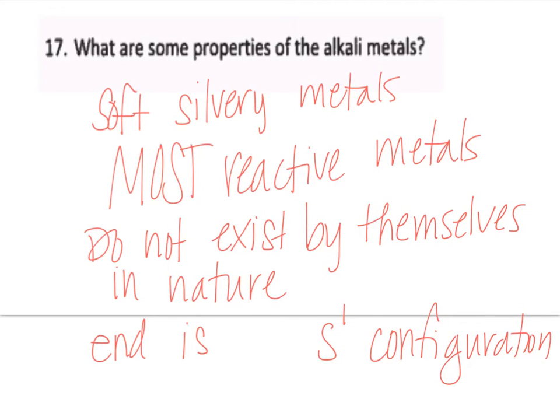What are some properties of alkali metals? That was in the flipped lesson. They are soft, silvery metals. They are the most reactive of the metals. They are, in fact, so reactive that you will never find them existing by themselves in nature. They'll always be bound up in a compound. And that's because they only have that one valence electron in the S1 configuration. And they are trying to get rid of it as quickly as possible so that they can be more stable with their core electrons that are underneath.